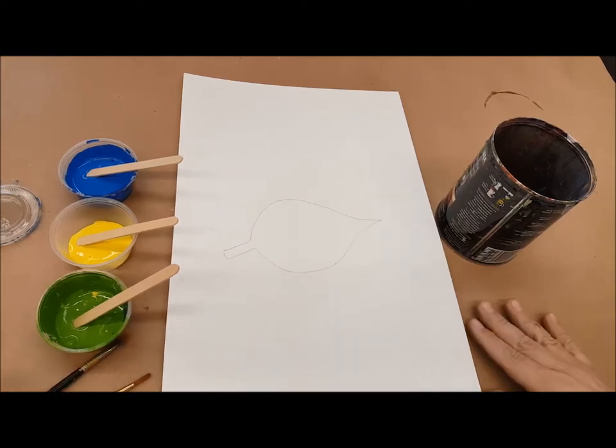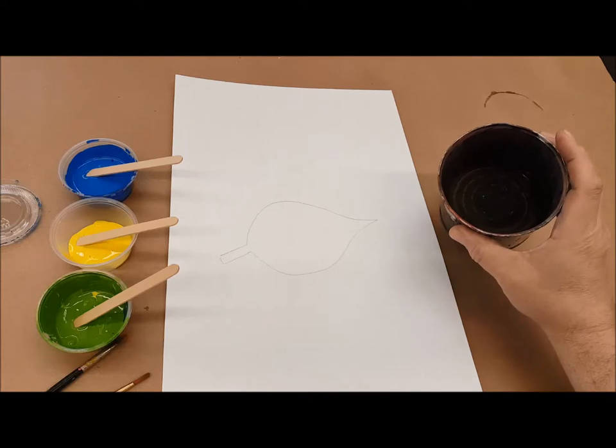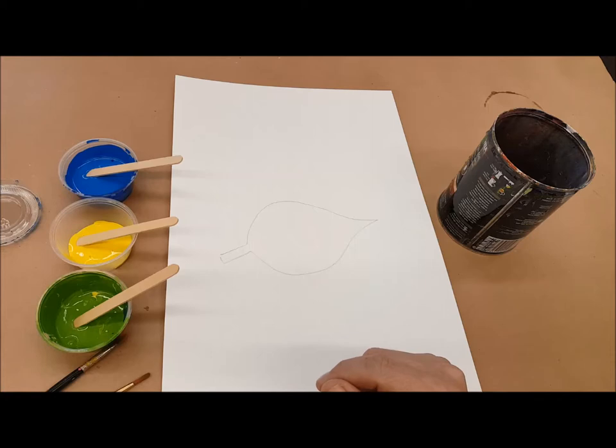You should set up your area with some kind of paper underneath, so if you have any paint that goes off of your surface, it could be caught by that. About half a can of water. You don't want a full can because it's too easy to spill. And then the acrylic paint that you're going to use.